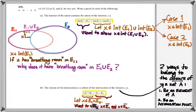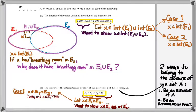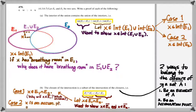Case one: X is actually an element of E1 intersect E2. The question is which of the two closure criteria X satisfies with respect to E1 — if it satisfies either one, X belongs to the closure of E1. Case two, the one requiring more work: X is an accumulation point of E1 intersect E2. Then we need to show X belongs to the closure of E1 and also explain why it belongs to the closure of E2.